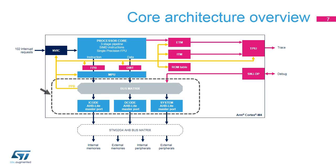For instance, an instruction access from flash memory using the I-code master port, a constant data access from flash memory using the D-code master port, and an SRAM access using the system master port. The Cortex M4's bus matrix is connected to the STM32G4 MCU's AHB bus matrix enabling the CPU to access memories and peripherals. Since transactions are pipelined on AHB-Lite, the best throughput is 32 bits of data or instructions per clock with a minimum 2-clock latency.